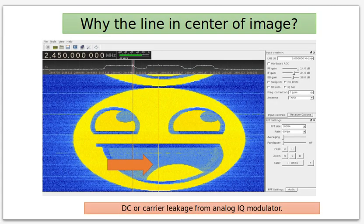So here's a classic image in the waterfall. And you might say, why is there that line in the center of the image? And this is a problem. I've talked about this numerous times. This is a problem of analog IQ modulators, what's called DC leakage. Essentially, the carrier oscillator is leaking out of the IQ modulator. So that's why you see that tone.